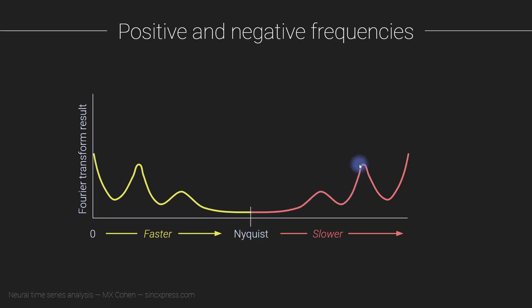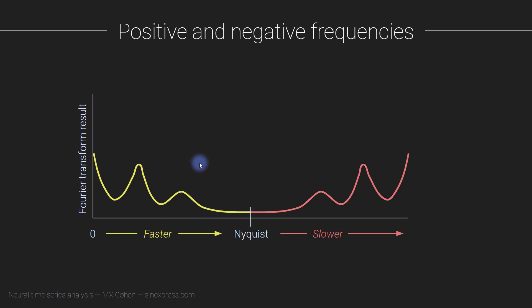What you see to the right of the Nyquist, towards the right side of the Fourier spectrum, is exactly a mirror image of what's on the left side, as long as the input signal you're taking the Fourier transform of is real valued. If you're taking the Fourier transform of a complex valued signal, things get a little bit weirder, and I'll talk about that in the next section of this course. But mostly we take the Fourier transform of real valued signals, so you get a spectrum that looks like this.